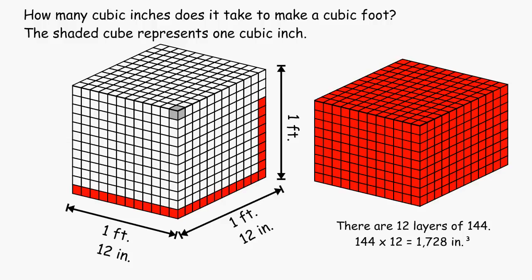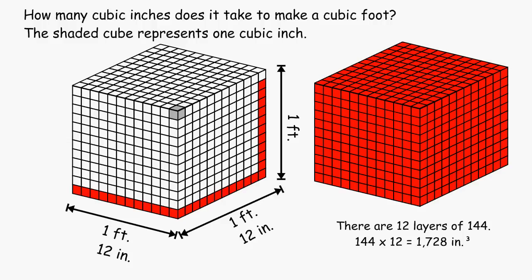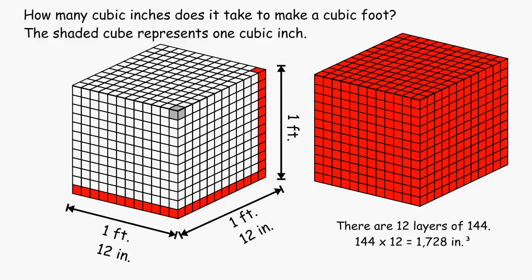So to figure out how many cubic inches there are all together, we could take one layer of 144 and multiply that by the 12 layers that we have, and that would give us a total of 1728 cubic inches.